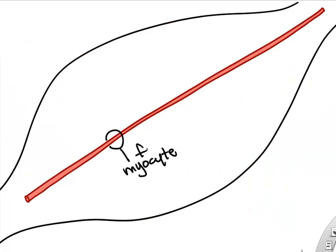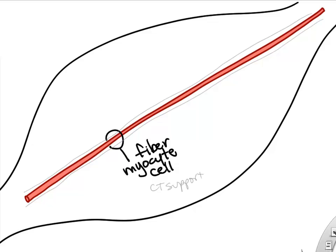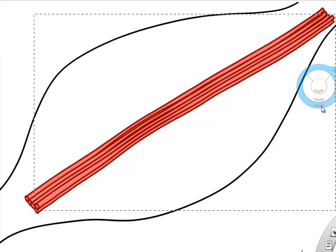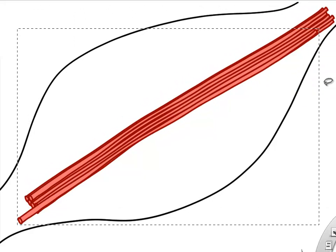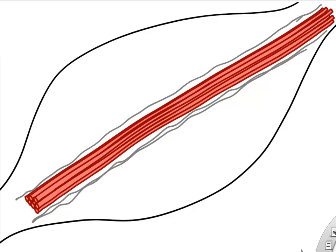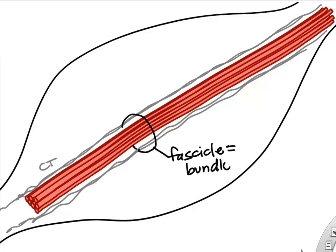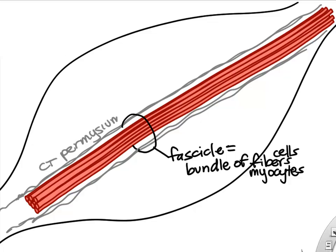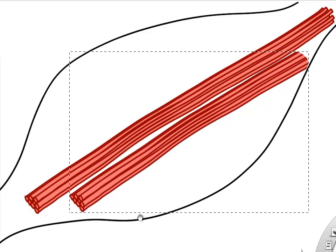For a typical muscle, we start at the cell level — also called a fiber or myocyte. Each little fiber has supporting connective tissue extending all the way from tendon to tendon. When we bundle a bunch of muscle fibers together, we call that a muscle fascicle, and we surround it with protective connective tissue called perimysium. A fascicle is simply a bundle of muscle fiber cells, and each fascicle has perimysium connective tissue extending all the way to the tendon — that's how the cells are anchored.